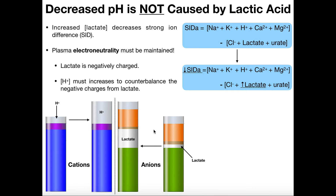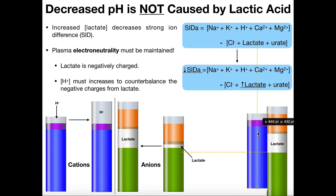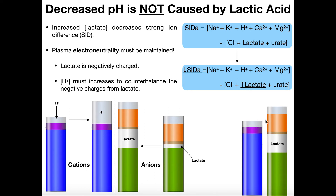Before the onset of high-intensity exercise, each colored region represents a different anion. The gray region in the middle is our lactate. If we have high-intensity exercise, notice what happens — the amount of lactate is going to increase, so our total amount of anions is going to increase. That's not good because lactate is negatively charged. We now have a pretty big difference between the amount of total anions and the amount of cations. That draws us away from electroneutrality because we have a lot more negative charges in the blood than positive charges, and we can't have that.